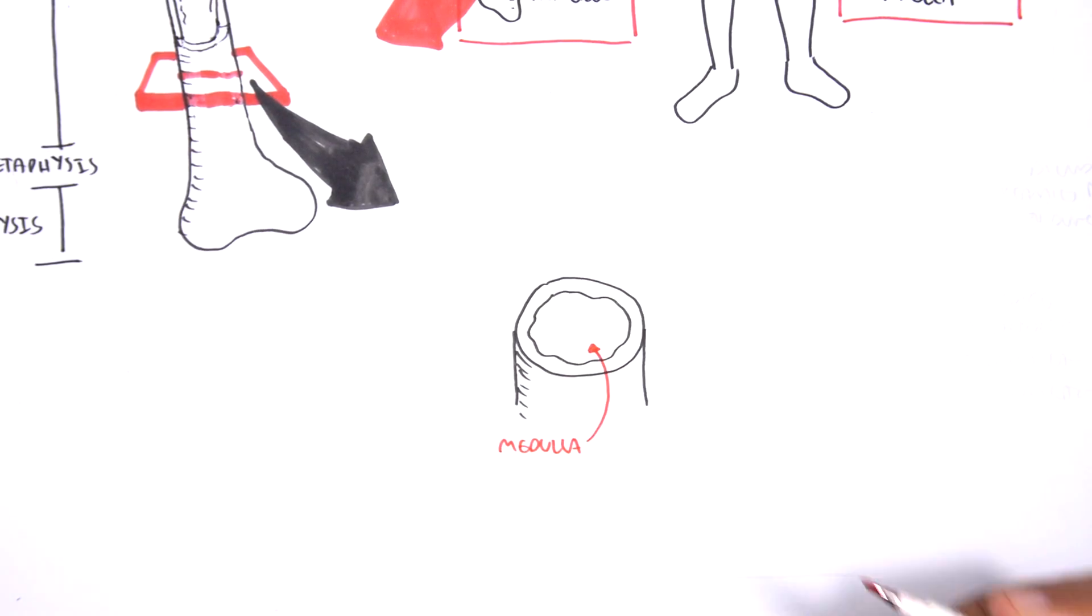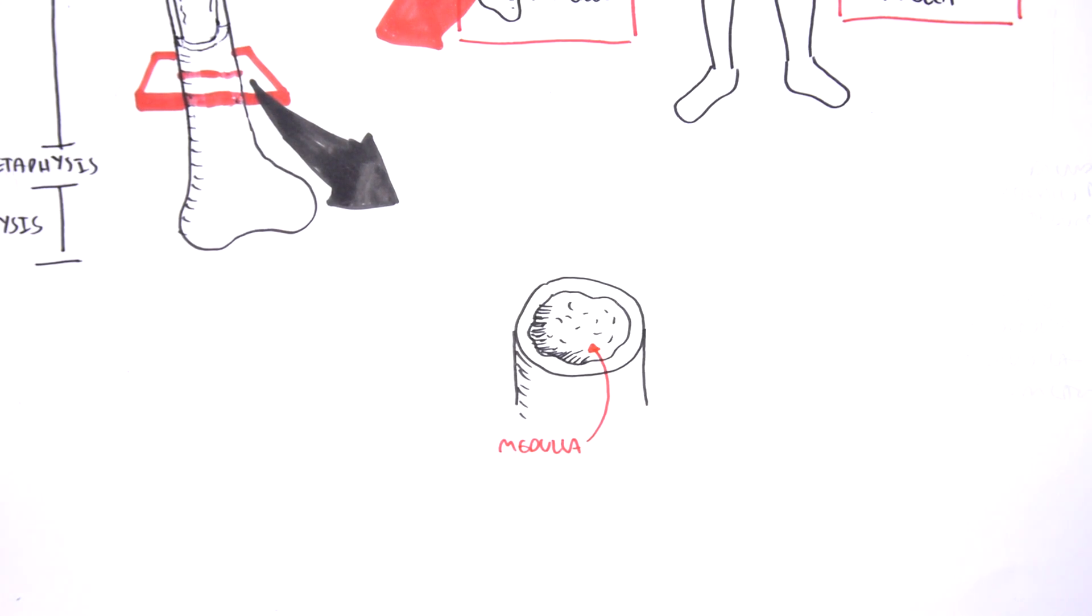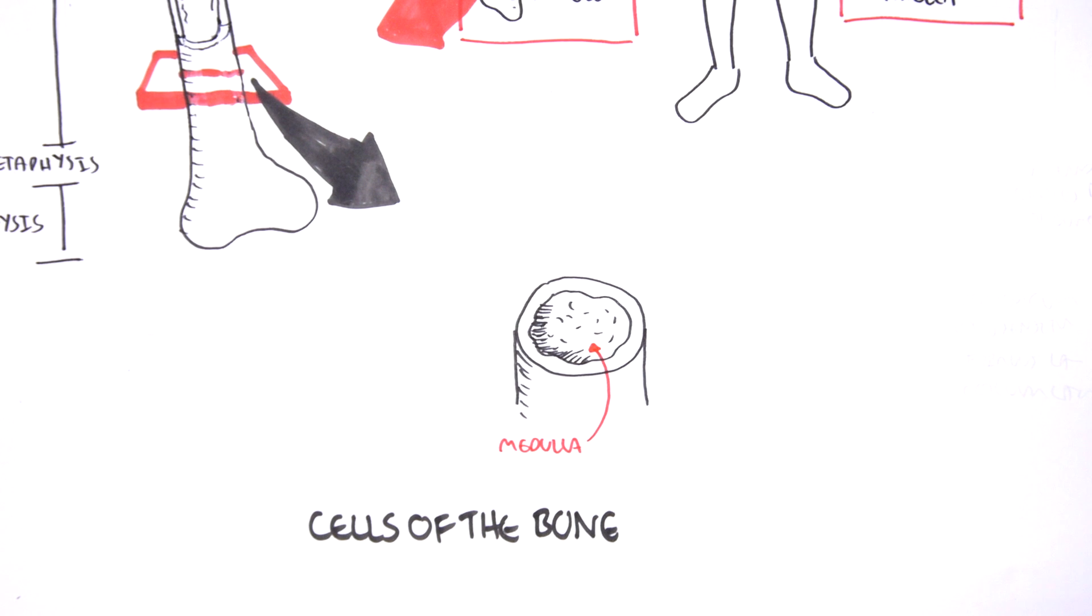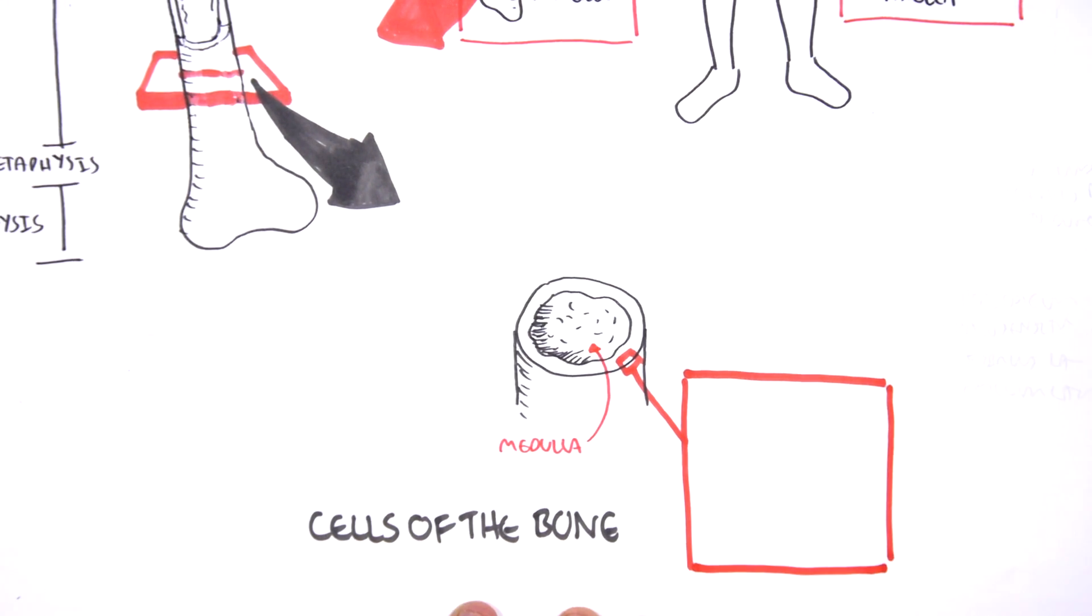There are many cells that actually make up the bone which play an important role, not only in making the bone strong and to help us with posture and movement, but the cells within the bones are very important in the homeostatic levels of minerals such as calcium and phosphate.